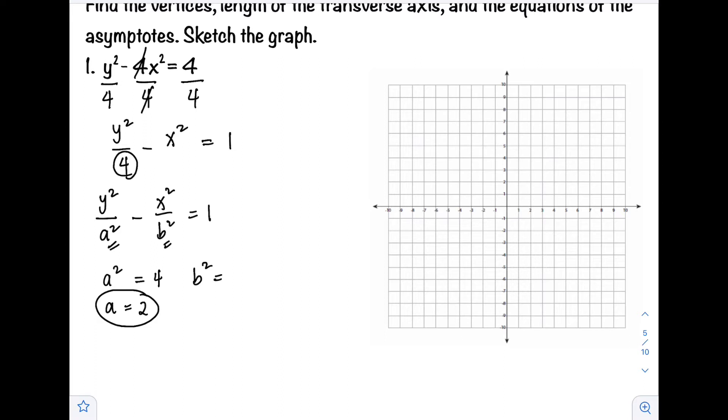Next is our b squared. Since there's no denominator for our x squared, that is understood as 1. So our b squared is equal to 1, and taking the square root, b equals positive 1.